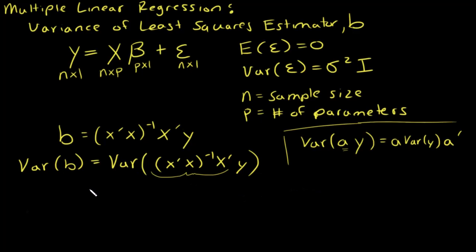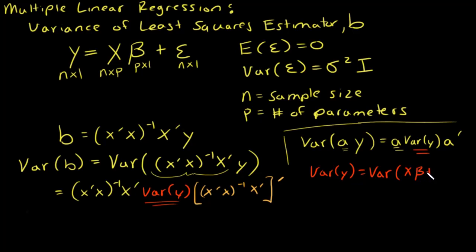So basically all of this here is what a is. So this is going to be x transpose x inverse x transpose, that's the first a, times the variance of y, that's the centerpiece, times x transpose x inverse x transpose transposed. Let's pause here and think about what's the variance of y.